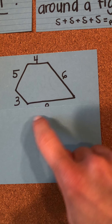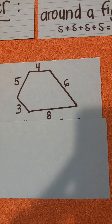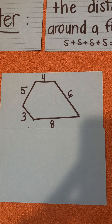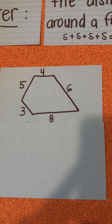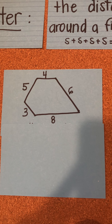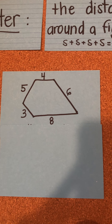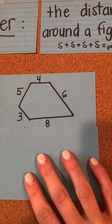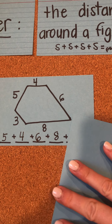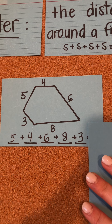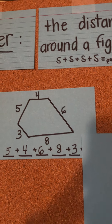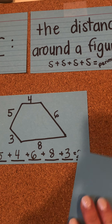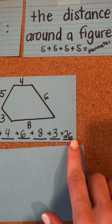I want you to draw this shape in your notebook. After you've drawn this shape, I want you to find the perimeter. Remember, the perimeter is the distance around a figure, so you're going to add side plus side plus side plus side. Find the sum and you will get the perimeter. 5 plus 4 plus 6 plus 8 plus 3 equals 26, so 26 is the perimeter.